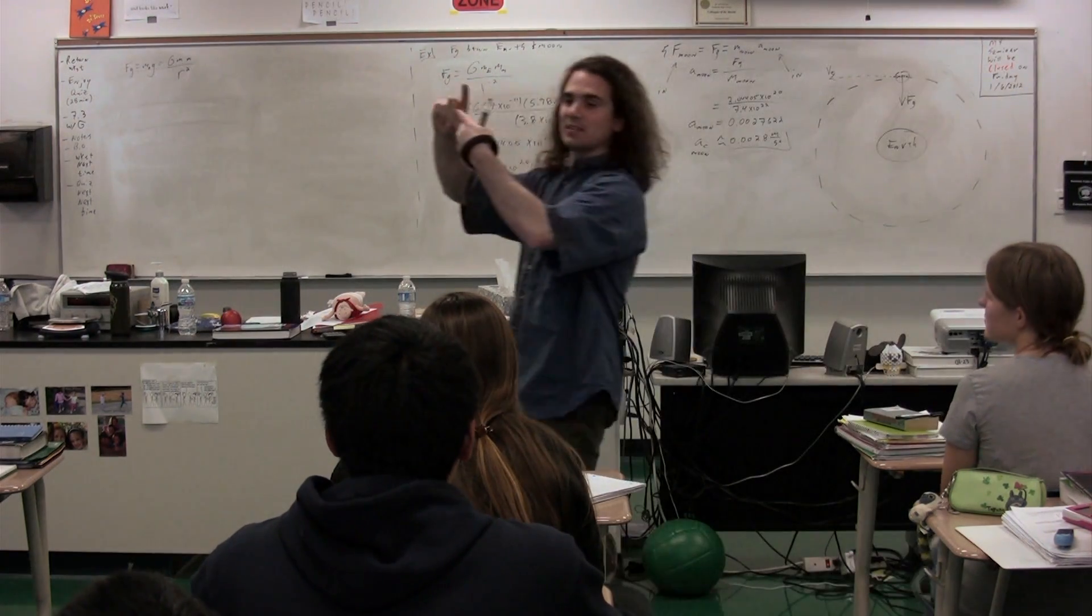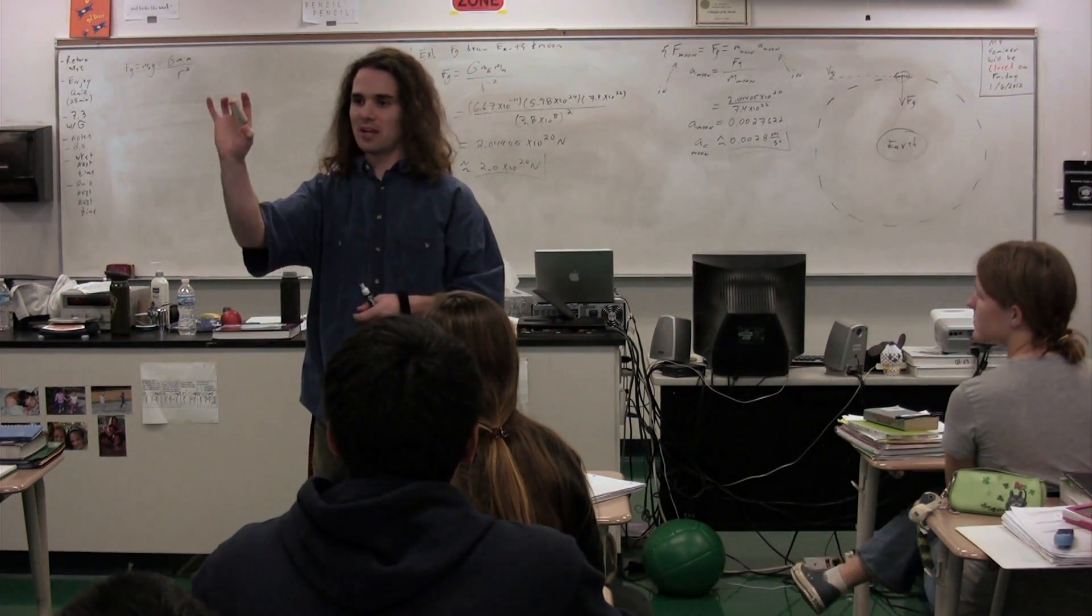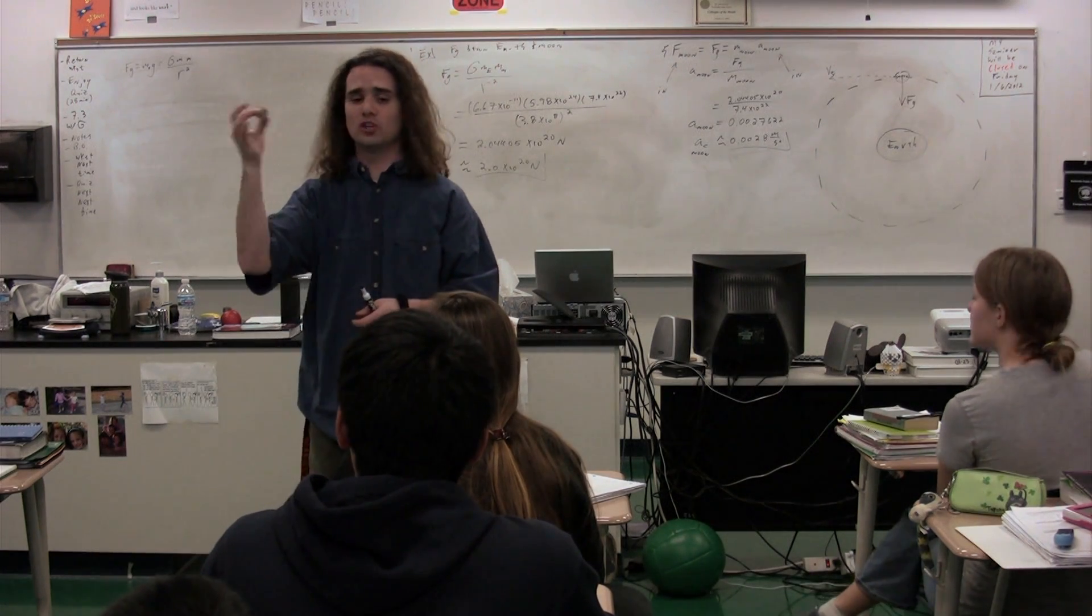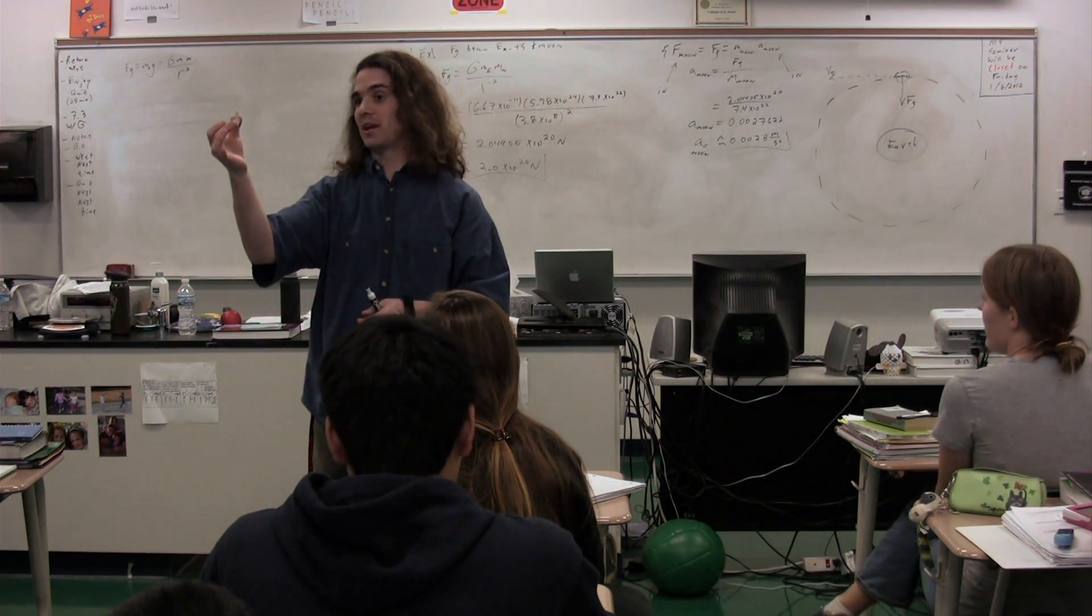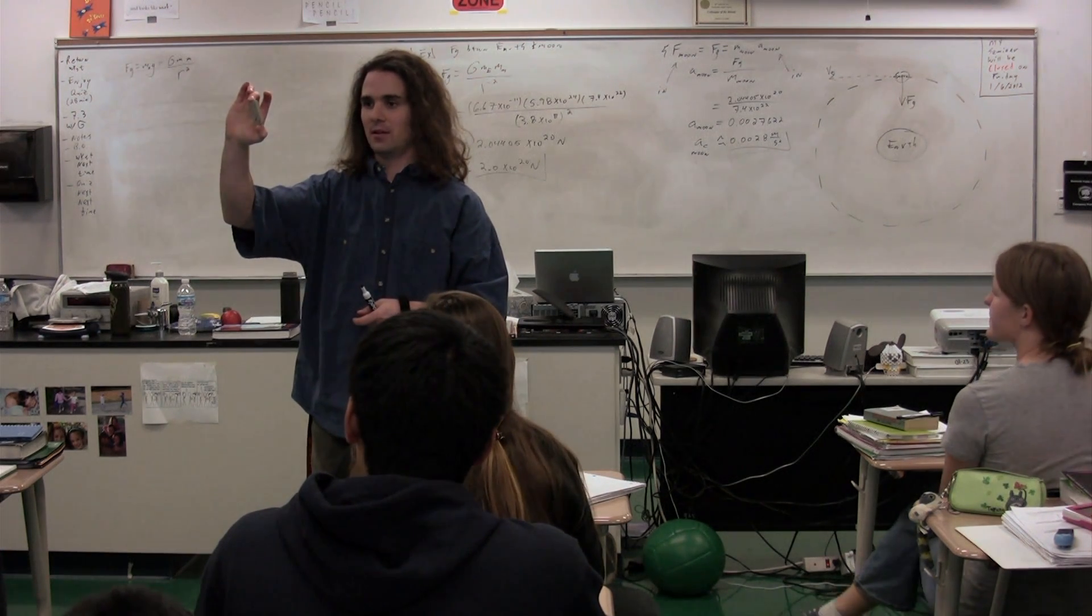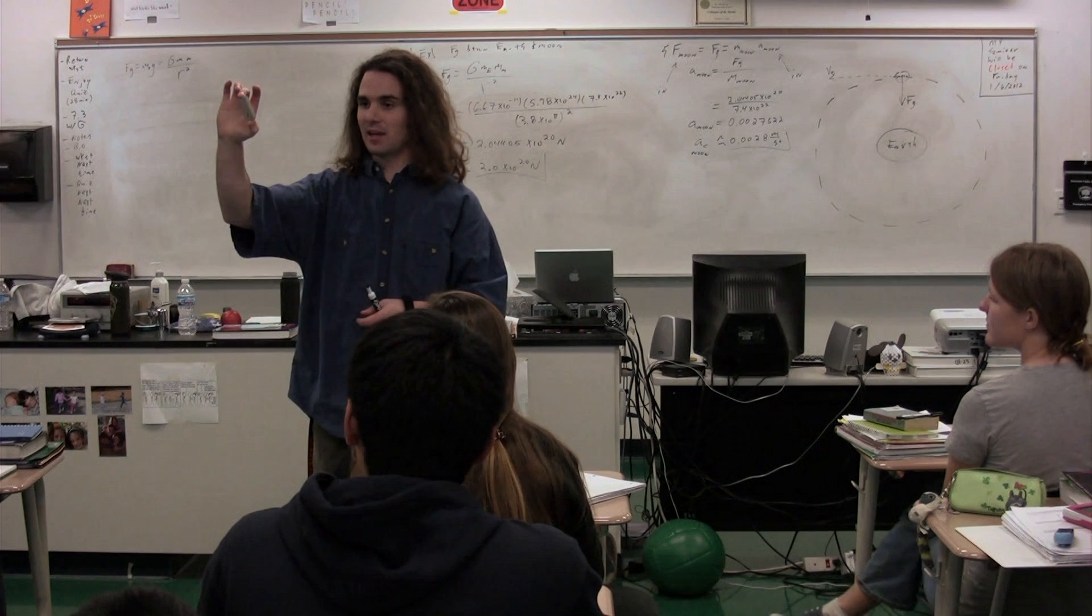So we have the force of gravity on this object, right? That would be the mass of the object times little g. But instead of using that equation, we could use big G m1 m2 over r squared. So if we were to use that equation, what would be the two masses? The object and?